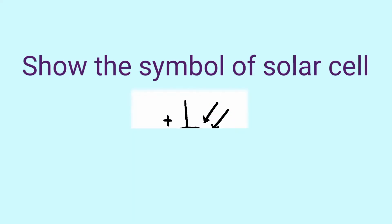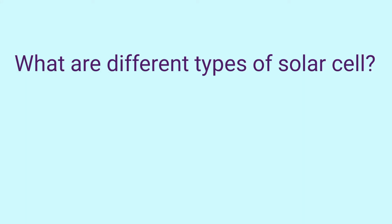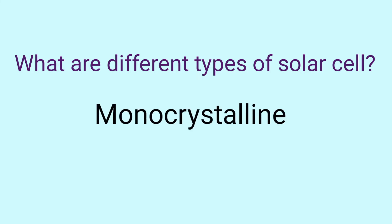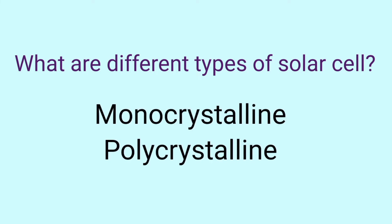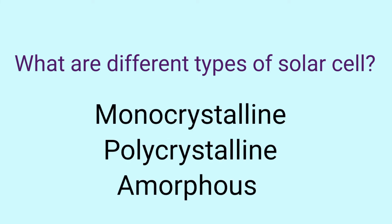Show the symbol of solar cell. This is how the solar cell symbol is represented. What are the different types of solar cell? We have monocrystalline cells, polycrystalline cells, and amorphous solar cells.